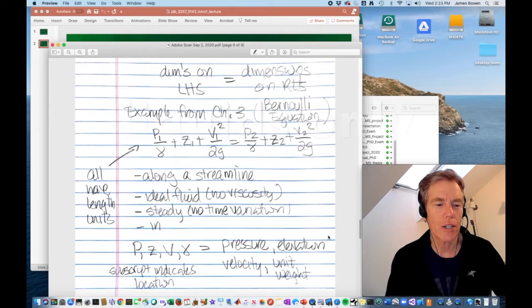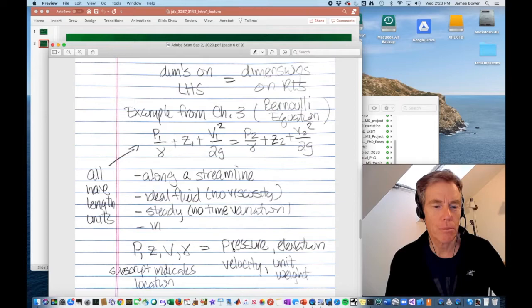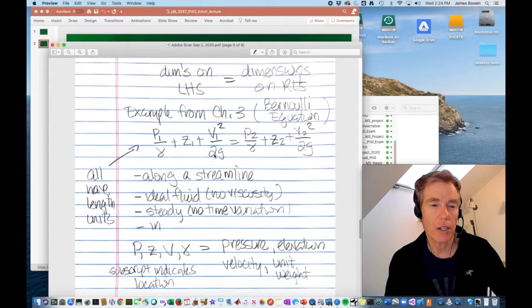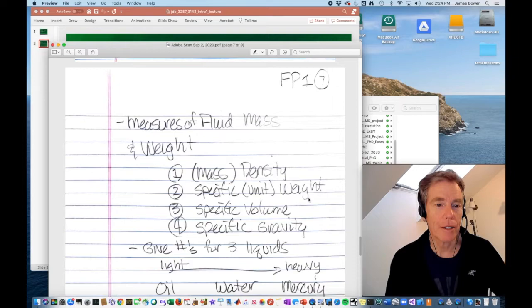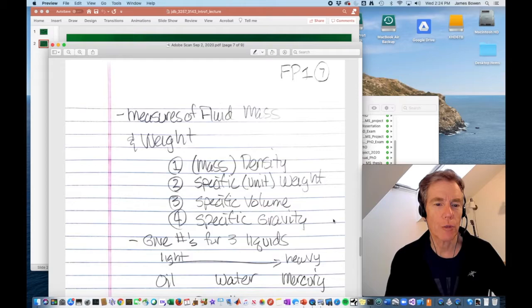So P1 over gamma plus Z1 plus V1 squared over 2G equals P2 over gamma plus Z2 plus V2 squared over 2G. This equation is true along a streamline. A streamline is the, at an instant in time, it traces the velocity vectors through a space. This equation is true for ideal fluids, that is, fluids that have zero viscosity. It's an equation that assumes that conditions are steady, that is, they're not varying in time. The terms in the equation are P, Z, V, and gamma that represent the pressure, the elevation, the velocity, and the unit weight. And the subscript on the pressure, the elevation, and the velocity indicates the location. So at location one, these three terms, their sum is equal to the same three terms at a second location. What you'll see is that each of these terms in the equation have identical length units.